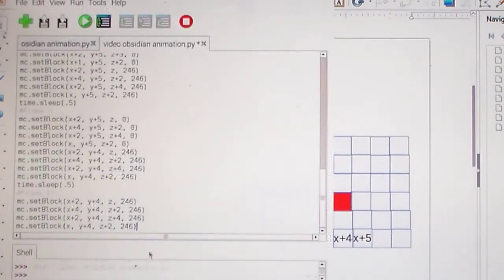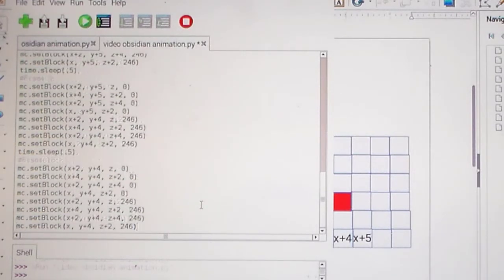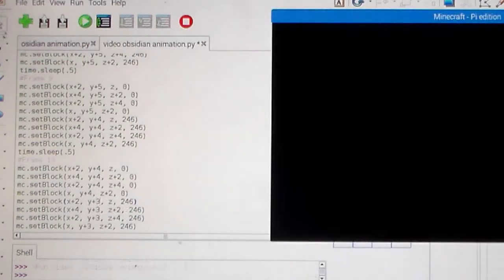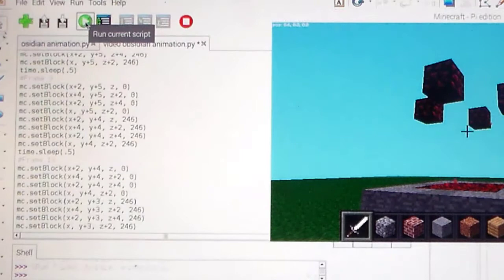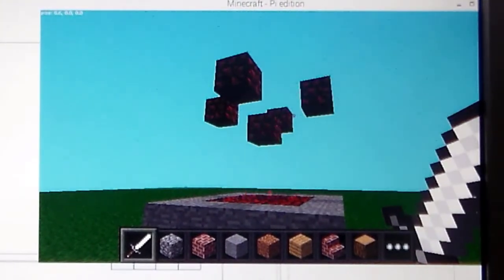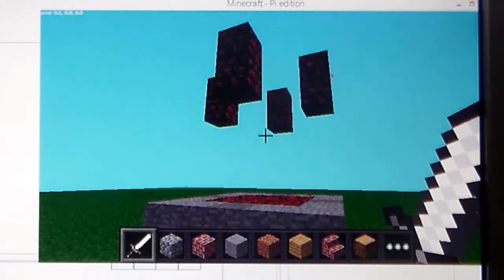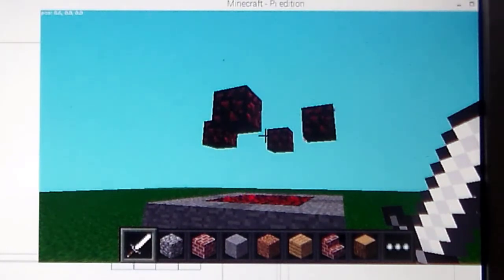And then we're going to just move our Y values down one more to the Y plus 3. And here we go. And so that is just turning into air. And now we paste it again, so I can turn all of my Y plus 4s into Y plus 3s, where we're going to have glowing obsidian. So here, when we run it, it should go up, go out, and go down two. Perfect.